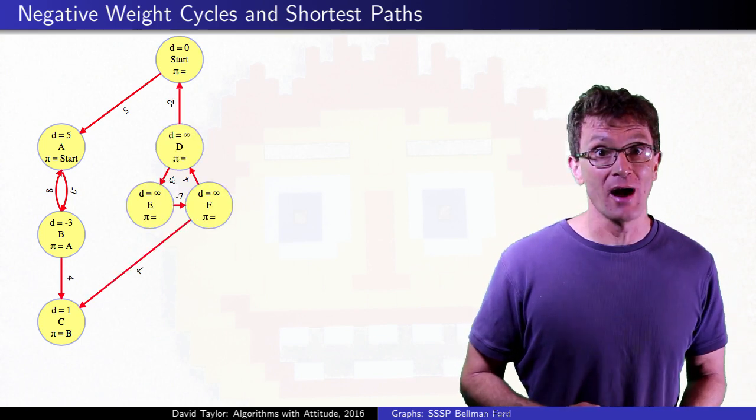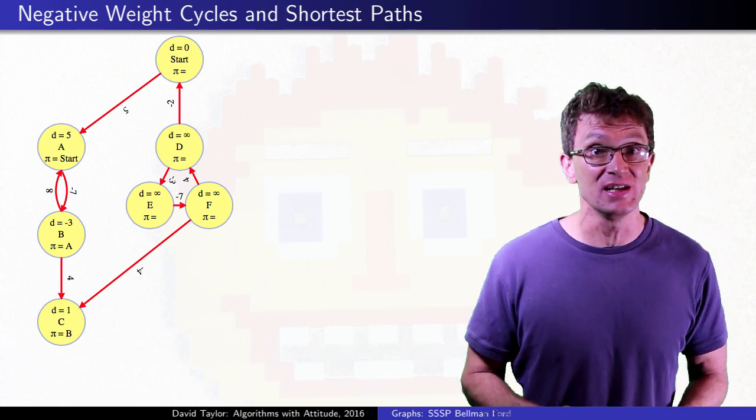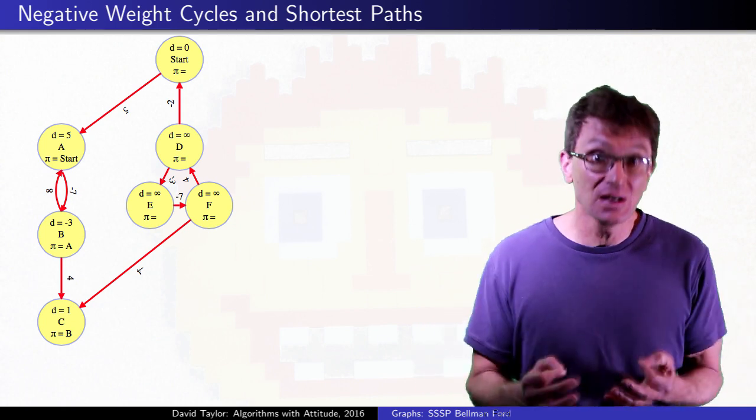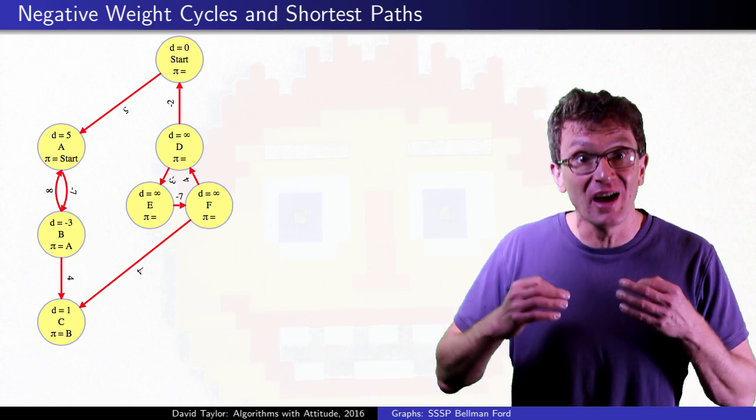If we add a bit more to the graph, there is a negative weight cycle with three edges between D, E, and F, but it still doesn't cause any problems with this start node because it isn't reachable.